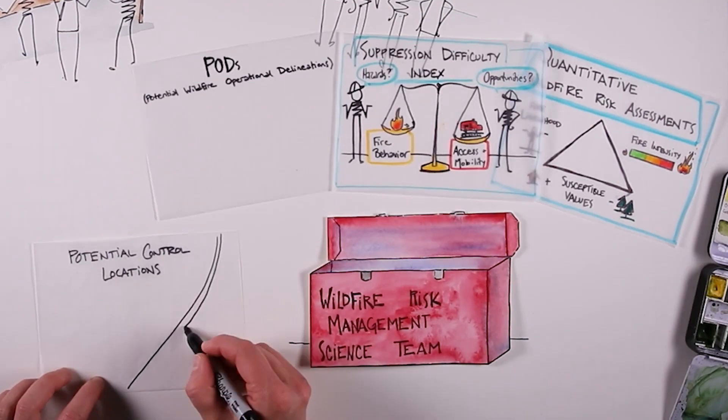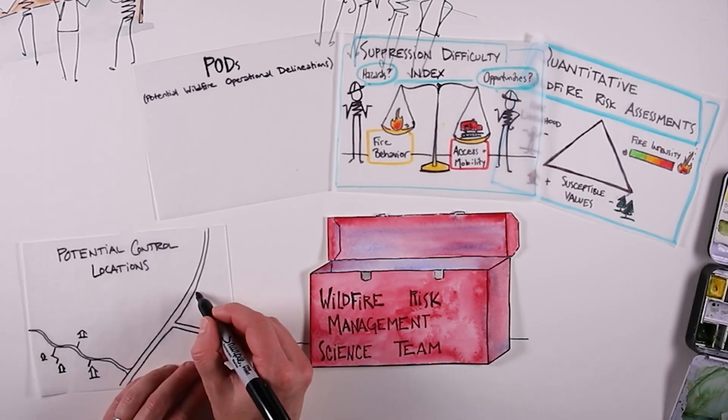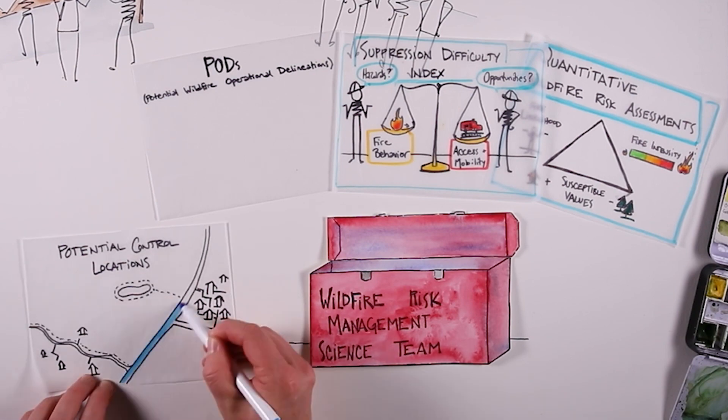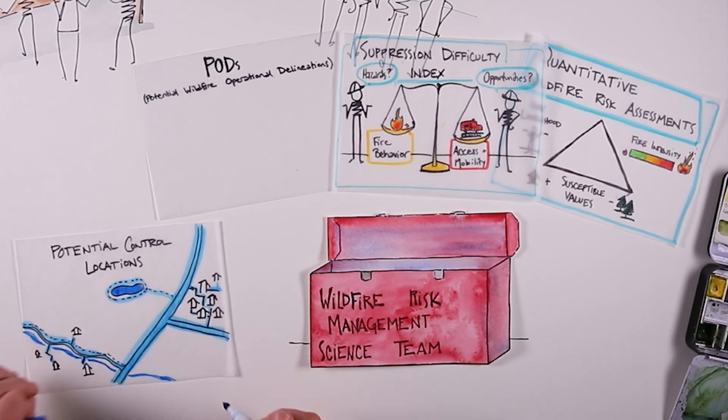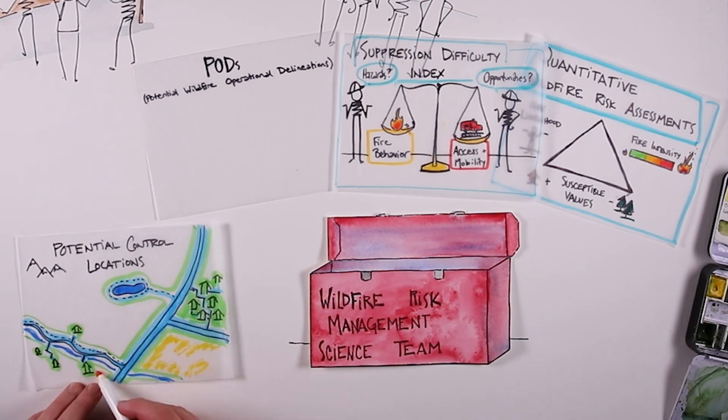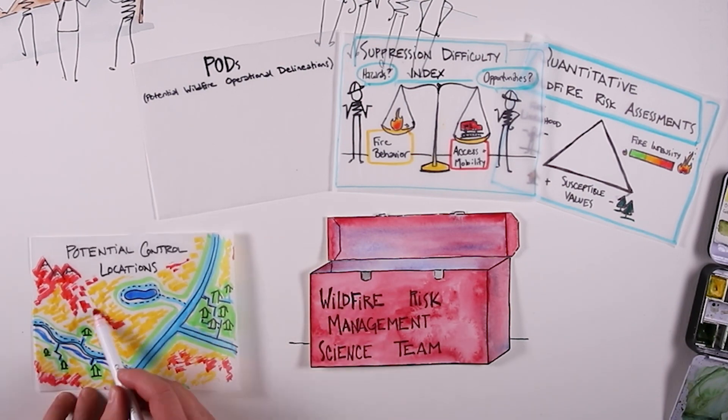The Atlas of Potential Control Locations maps local conditions where fire lines have and have not been effective in the past, and provides a measure of operational opportunities and challenges for suppression.